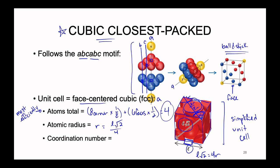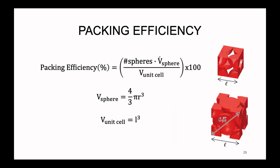Last but not least, how many atoms are touching each other inside the FCC unit cell? It can be difficult to see based on the packing models, so the coordination number for the cubic closest packed structure is 12. Not only do we have more atoms inside the unit cell, but because of how efficiently packed everything is, each atom is touching 12 other atoms around it in the structure.